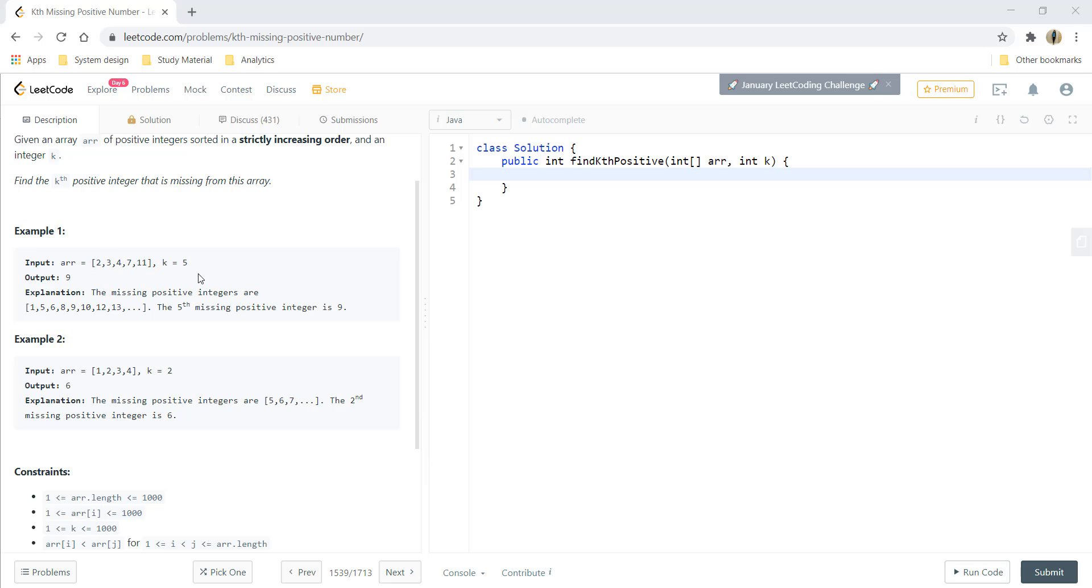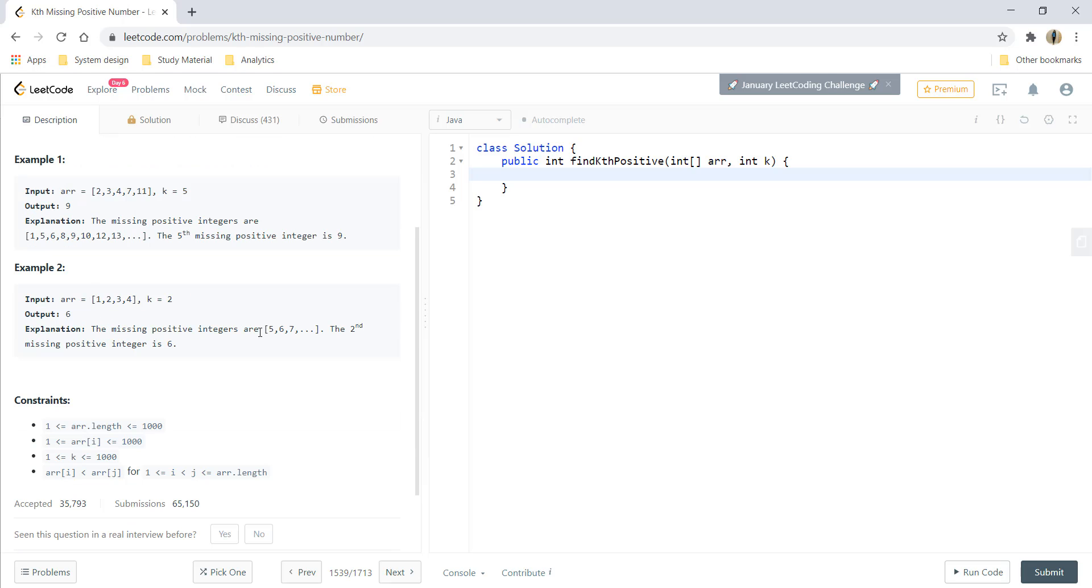In the first example, we are given a few numbers which are sorted and k equals 5. The missing numbers here would be 1, 5, 6, 8, 9, 10, 12, and so on. The fifth missing number is 9, so the output becomes 9. For example 2, the missing numbers would be 5, 6, 7, and so on, and the second missing number is 6.